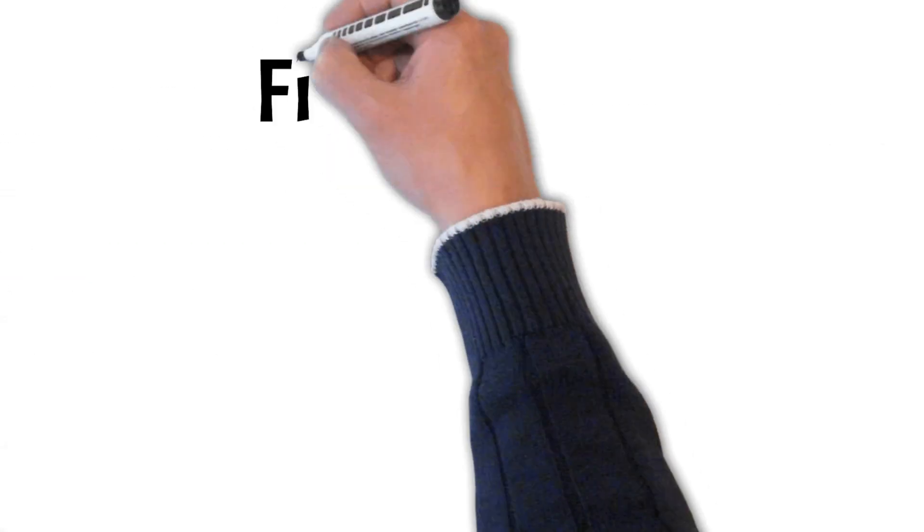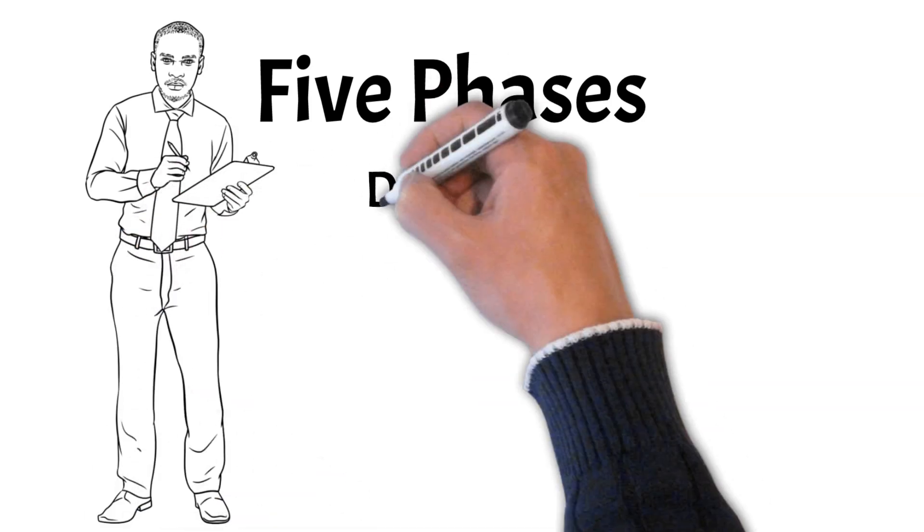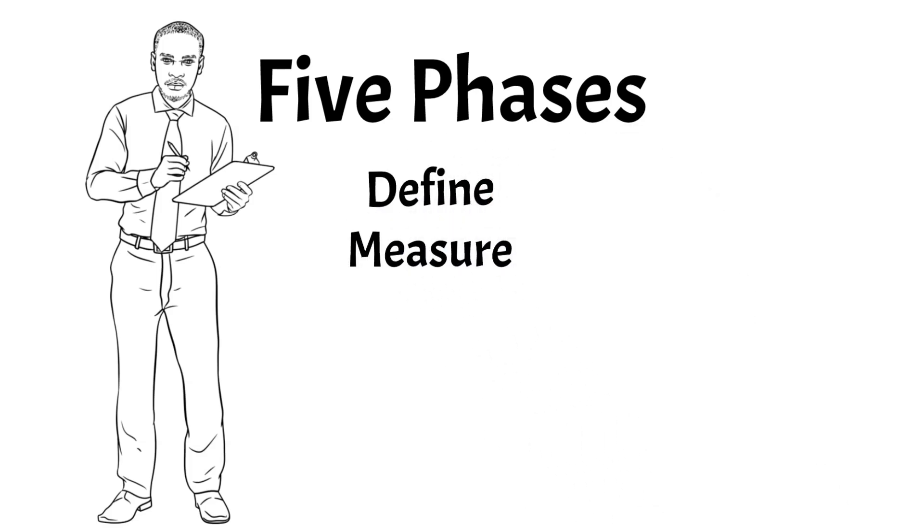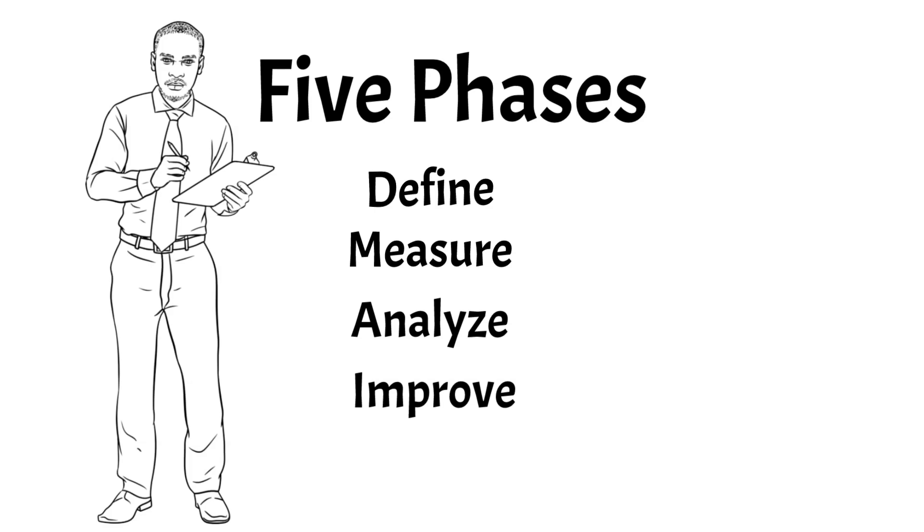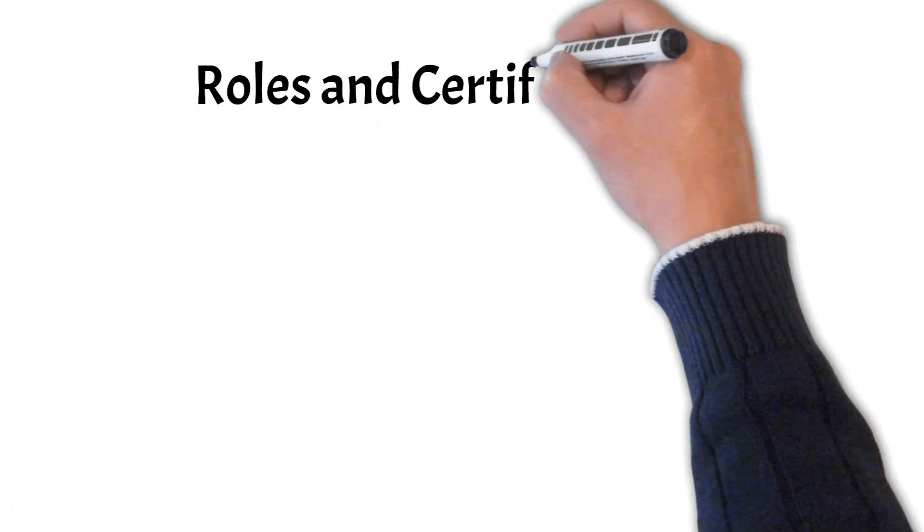Six Sigma is guided by a well-defined methodology consisting of five phases: Define, which is identifying the problem; Measure, which is collecting data; Analyze, which is making sense of what is going on and determining what needs to be done; Improve, which involves developing and implementing solutions; and Control, which is monitoring improvements to ensure sustainability and prevent reversion to old ways.